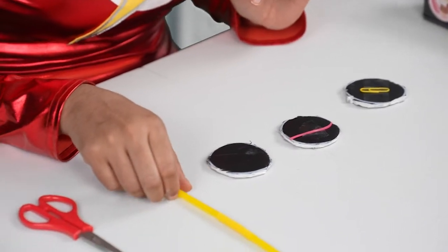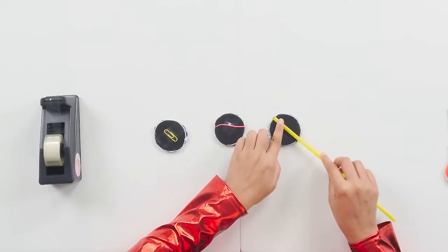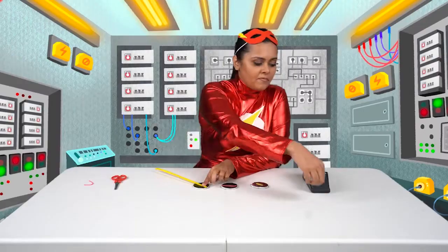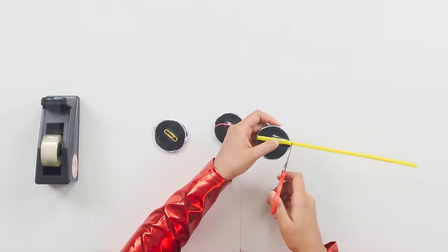Okay, next we'll do the same thing with our straw. Bring the straw down to your circle, right to the edge. Grab some tape. Stick it down to your circle. Grab your scissors, and cut the straw so that it just fits within your circle.